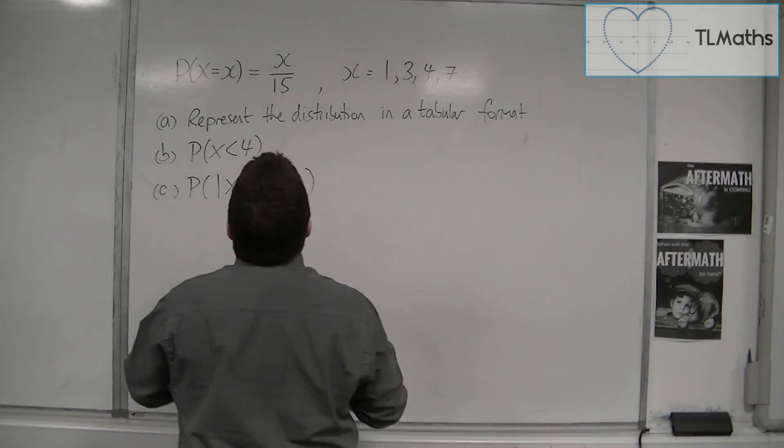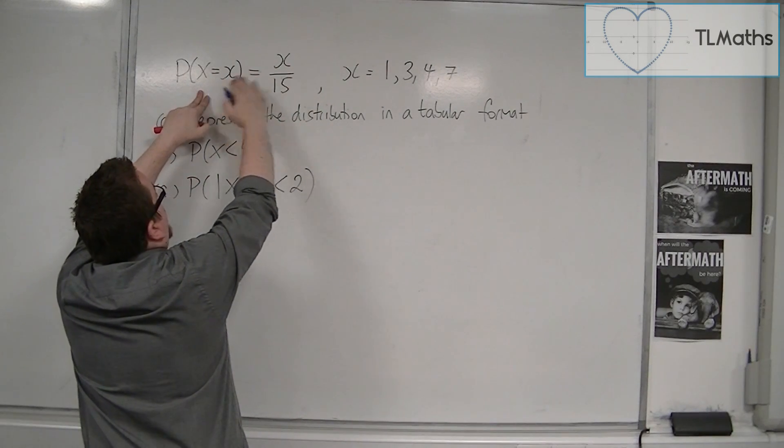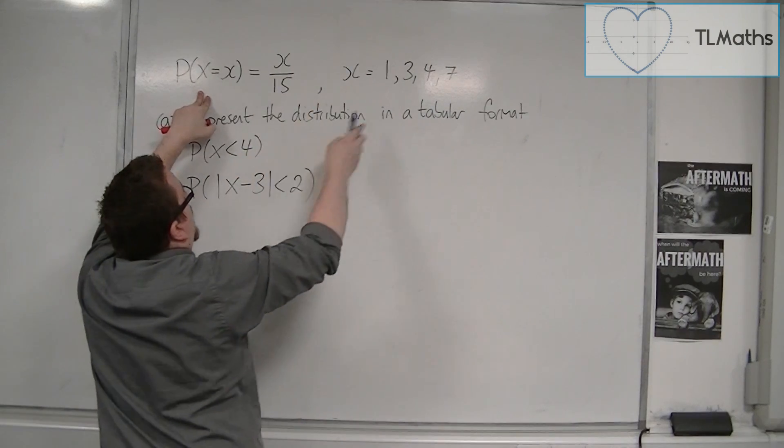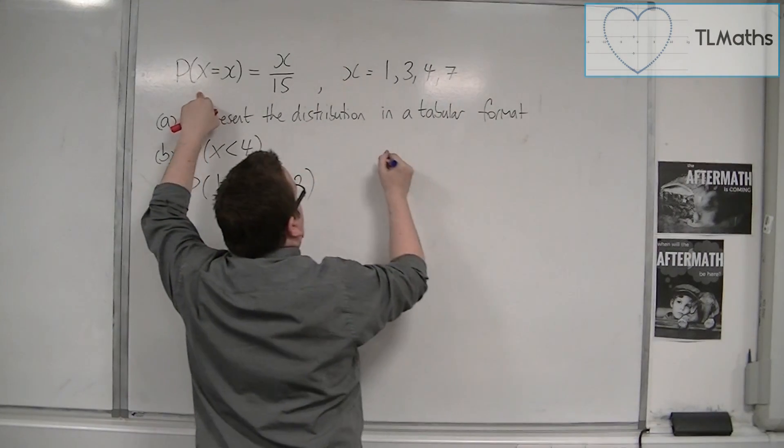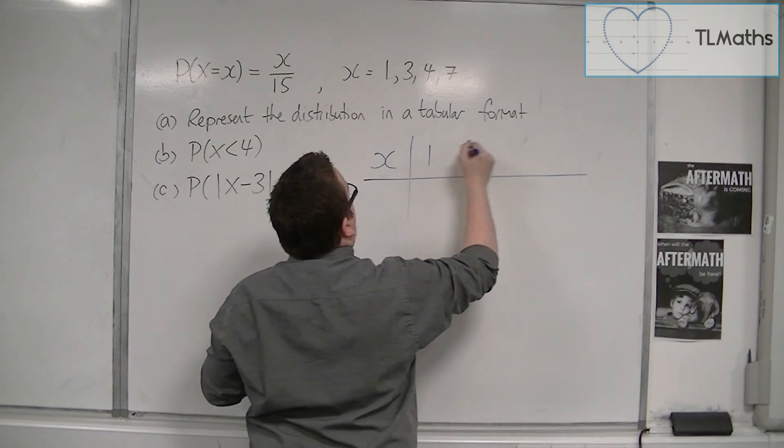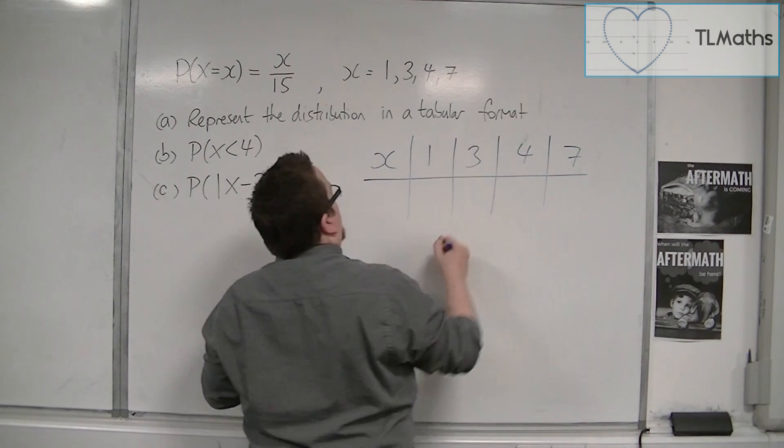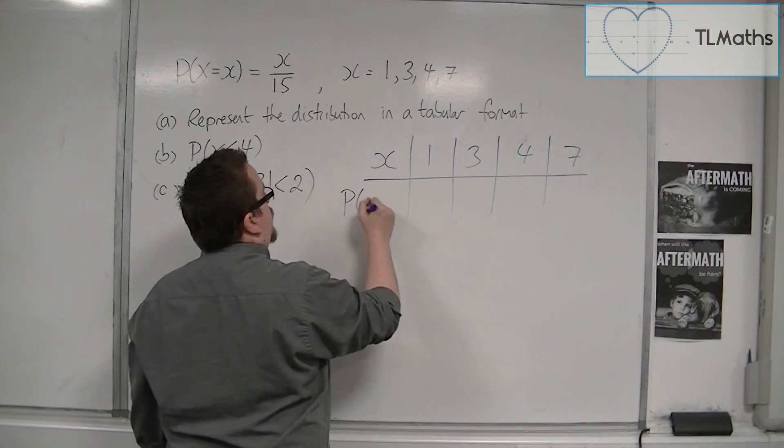So what we have is that the probability of x being equal to each of the values is x over 15, where these are the values that we can take. So that is the top row: 1, 3, 4, and 7. Now the bottom row is made up of the actual probabilities.